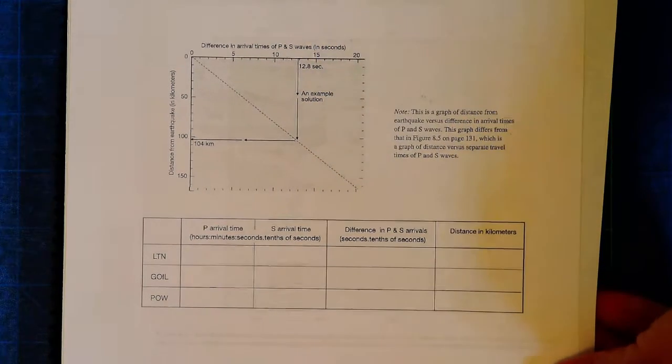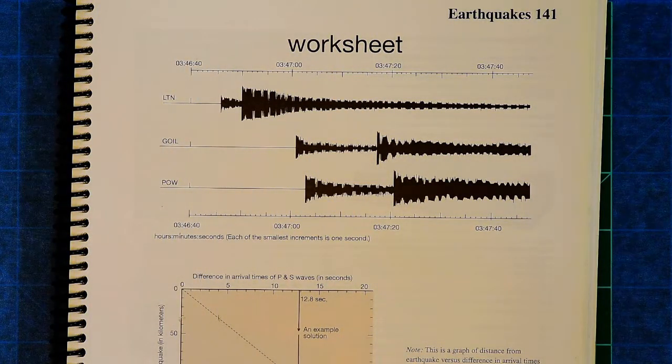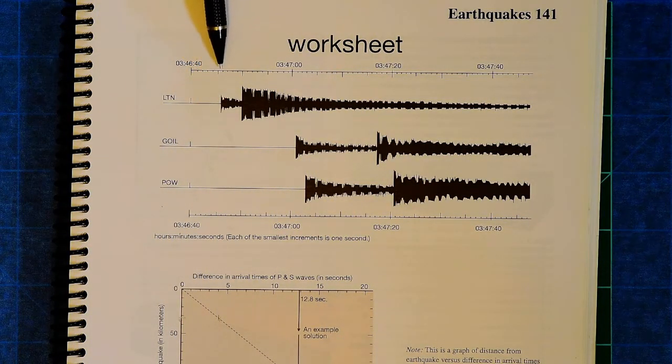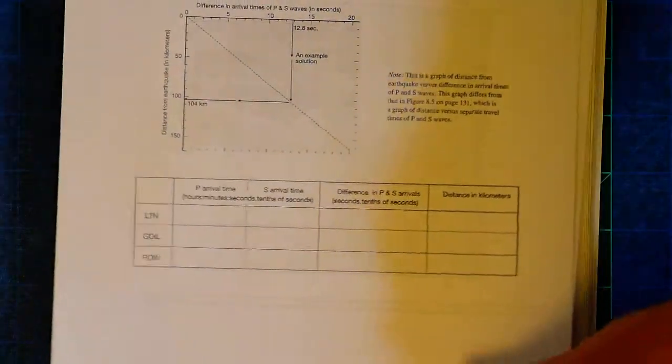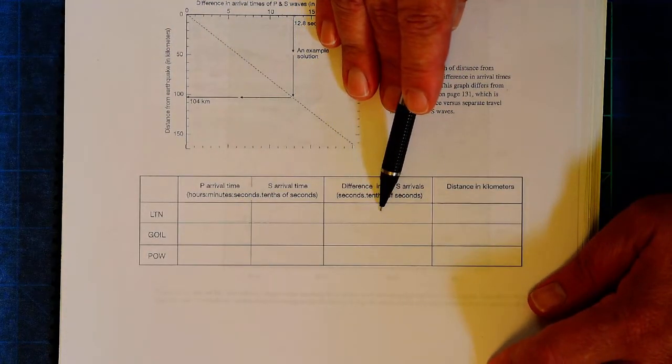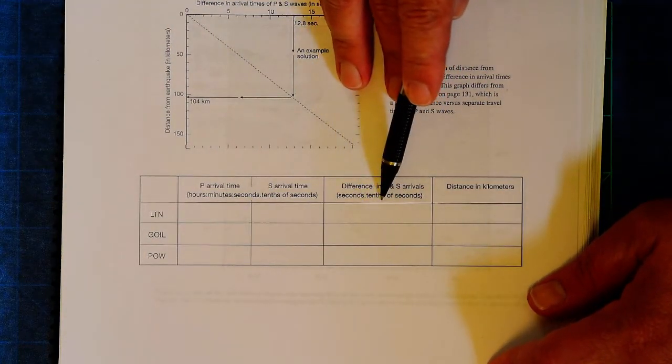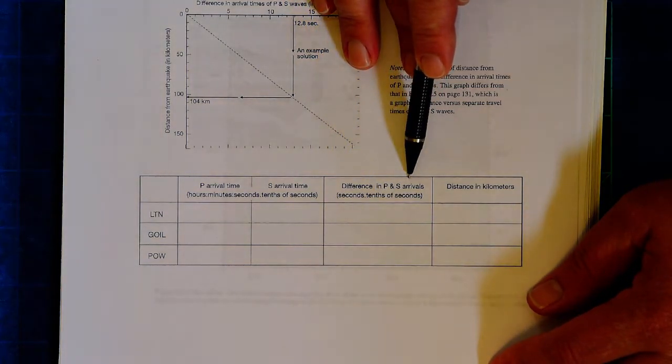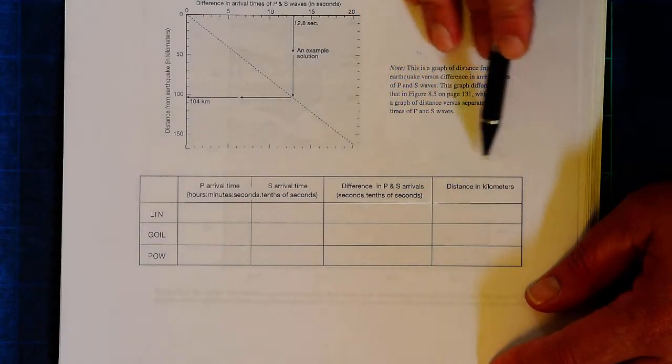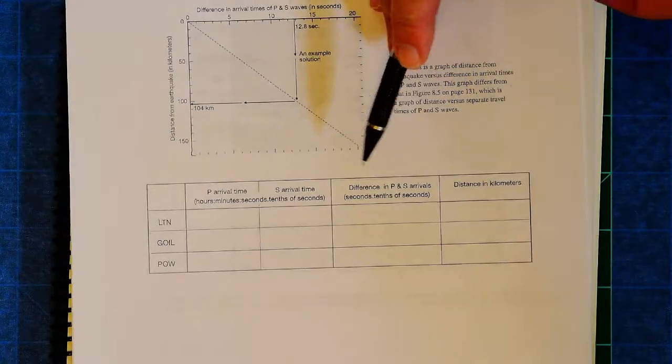Now the difference between the P and the S waves, if one arrived at 45 seconds and one arrived at 50 seconds, the time difference would be 5 seconds, which is what you write in here. And now that you have the difference in the P and the S wave arrival times, we can calculate the distance in kilometers.